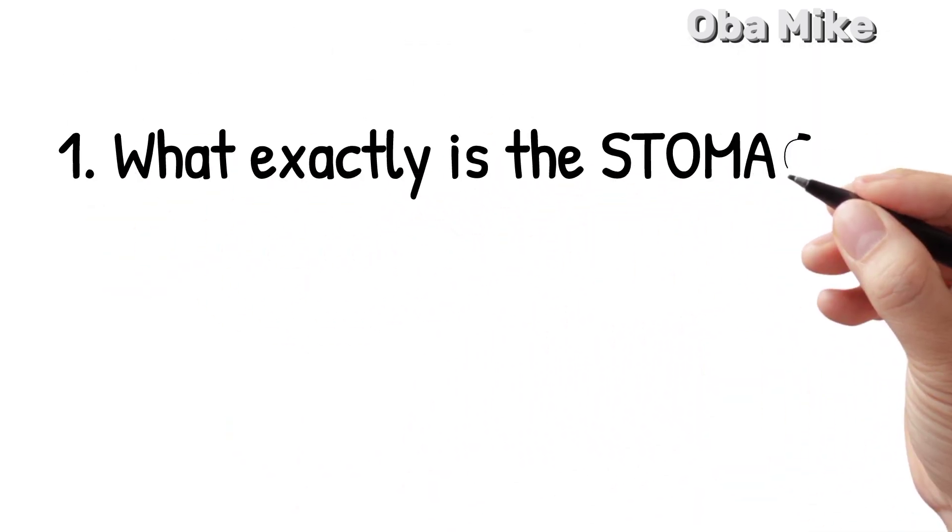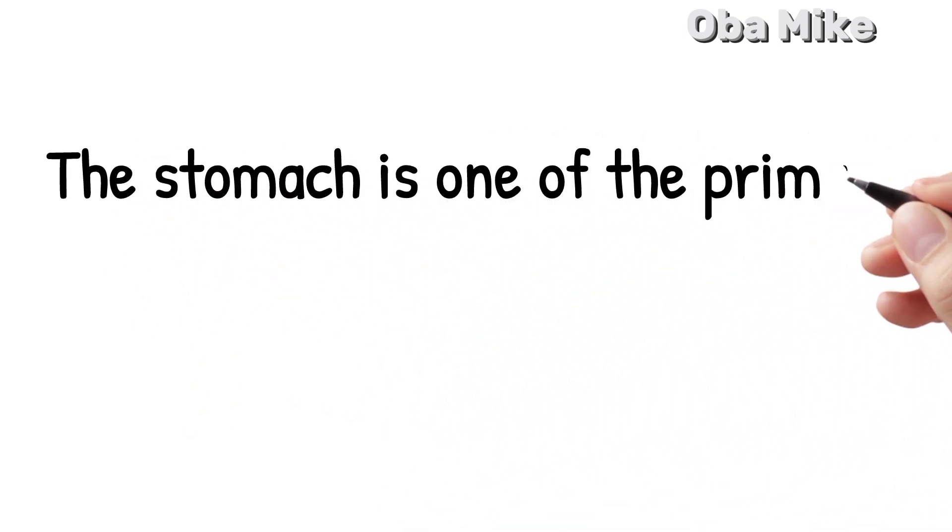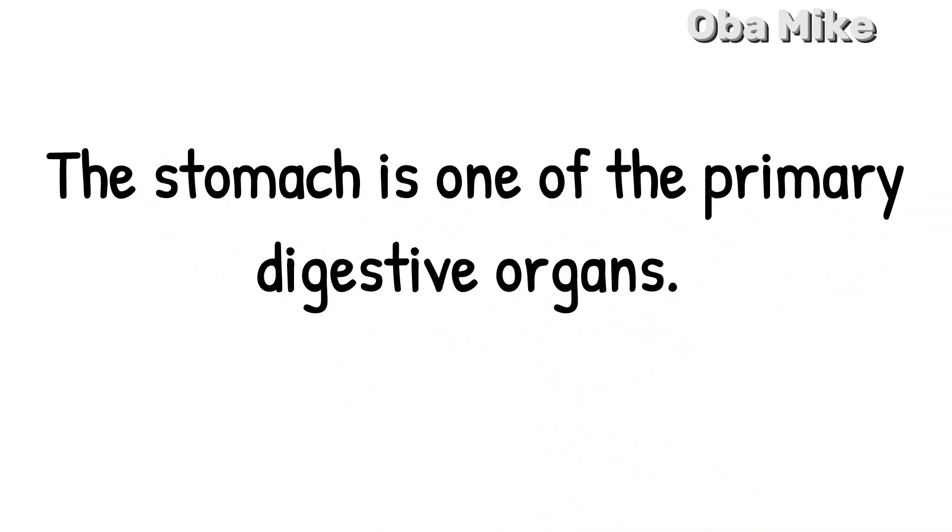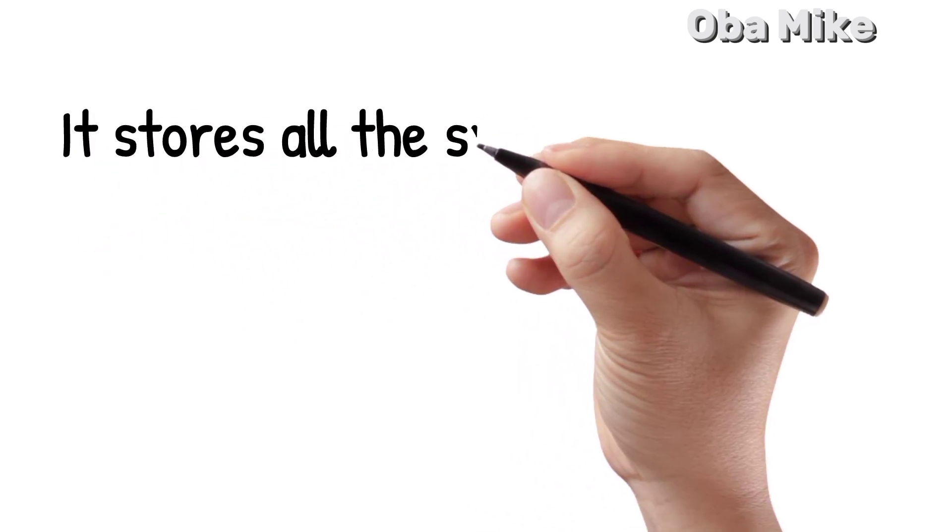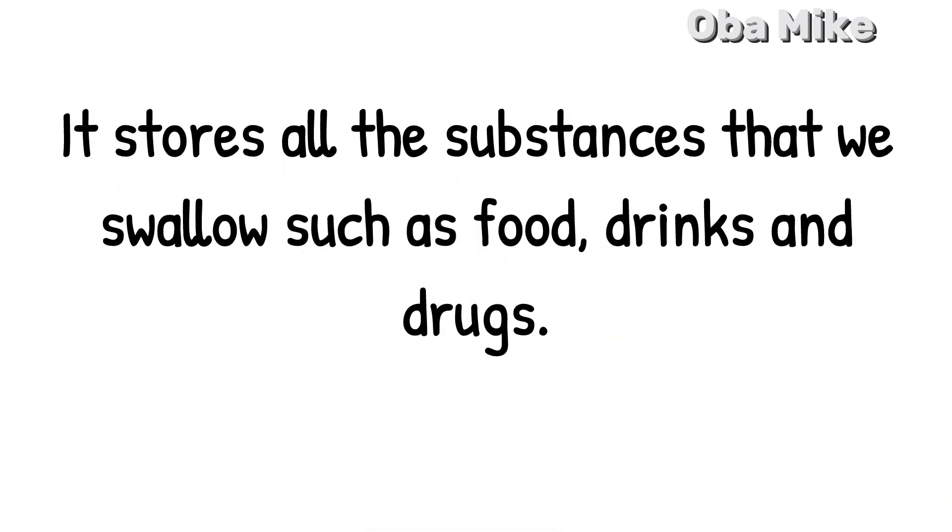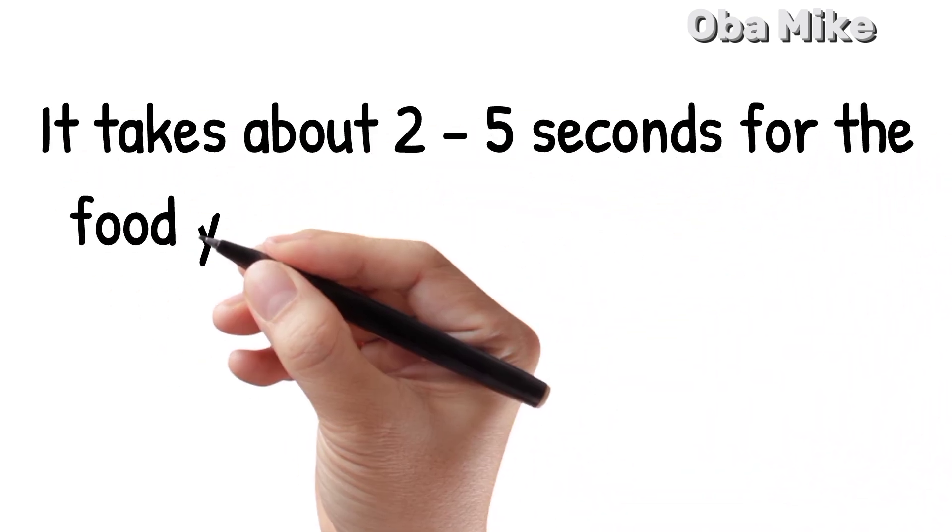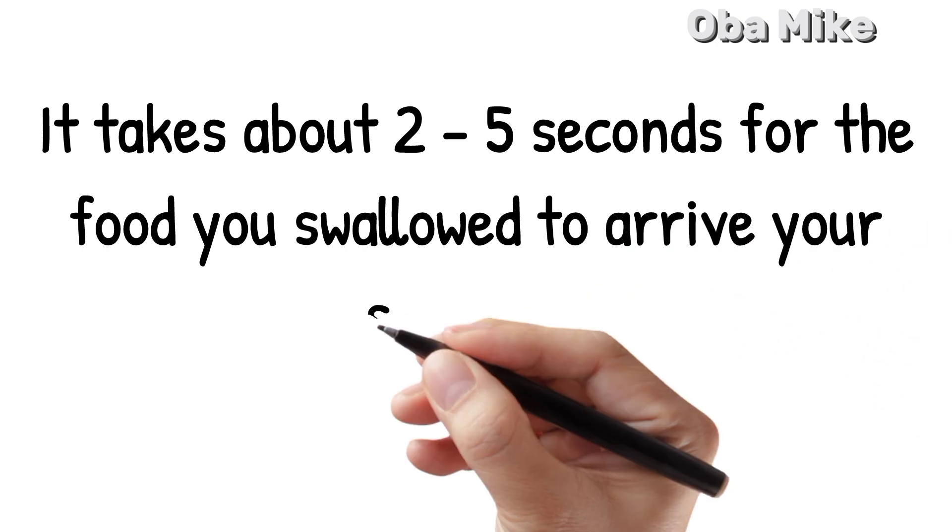Number 1. What exactly is a stomach? The stomach is one of the primary digestive organs. It stores all the substances that we swallow, such as food, drinks, and drugs. It takes about 2-5 seconds for the food you swallowed to arrive at your stomach.